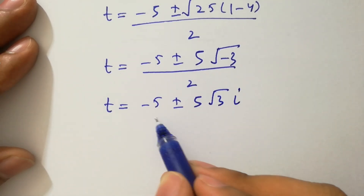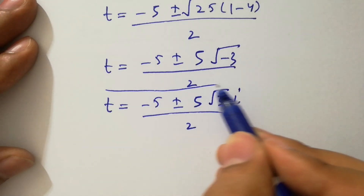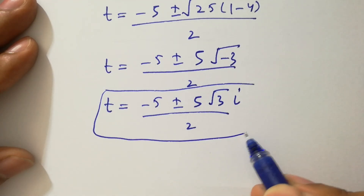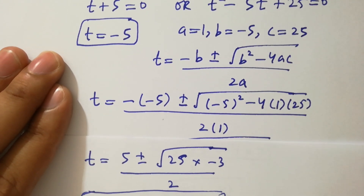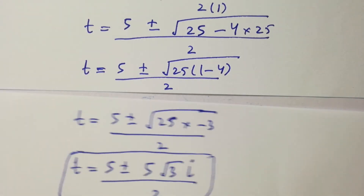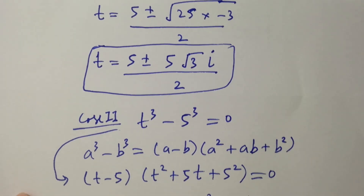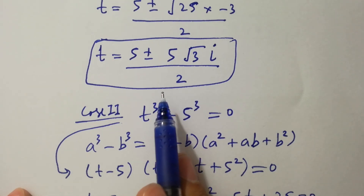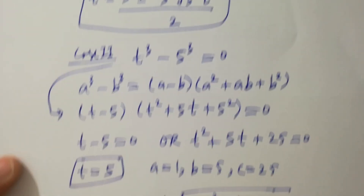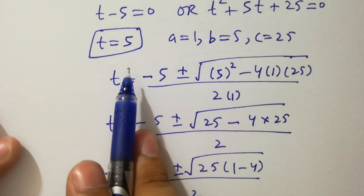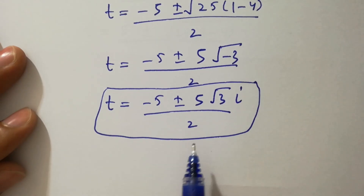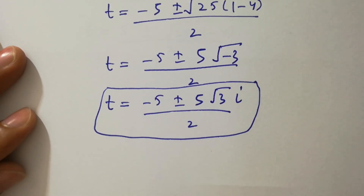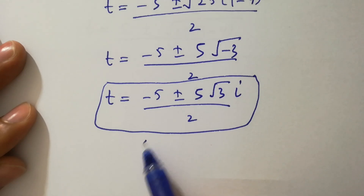Since square root of minus 1 is i from complex numbers, these are also two complex solutions. So finally, we have six solutions in total: t equals 5, t equals minus 5, and t equals 5 plus or minus 5 times square root of 3 i over 2, and t equals minus 5 plus or minus 5 times square root of 3 i over 2.